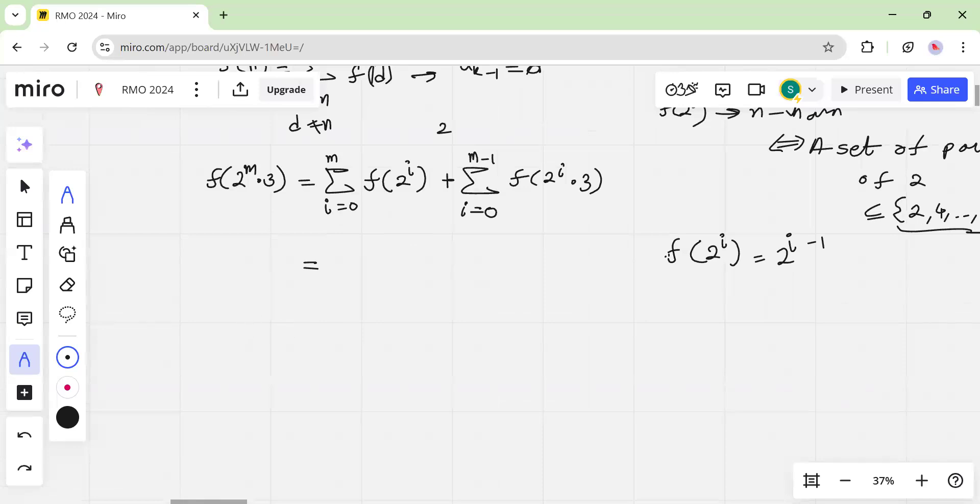You have, you also have f of 2 raised to m minus 1 times 3 is equal to, by the same thing, i is equal to 0 to m minus 1, f of 2 to the i plus summation i is equal to 0 to m minus 2 times f of 2 to the i times 3.